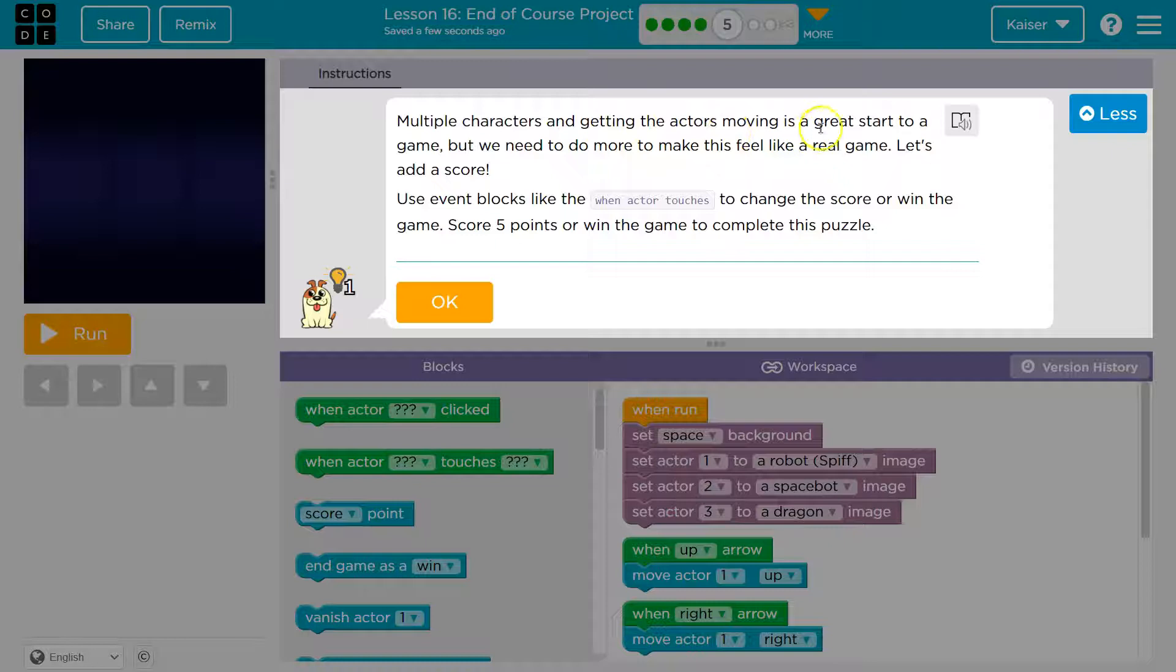All right. Multiple characters and getting actors moving is a great start to a game. But we need to do more to make it feel like a real game. Yes, like add a score. Use event blocks. These green blocks are events, right there. When we do something, when we make some action on the computer, that's considered an event, something has happened. Like when actor touches, right? So when up arrow, that's an event. When actor touches to change the score or win the game. Score five points or win the game to complete this puzzle.